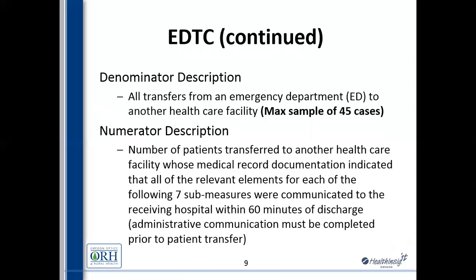In the denominator of this measure are all transfers from an emergency department to another healthcare facility. Importantly, you only have to submit a maximum sample of 45 cases. The quality manual explains how to select this random sample. If you're new to this work, you do need a max sample of 45 cases. Your 45 cases are selected from all of your transfers; if you have fewer than 45 transfers, then it actually is all transfers.